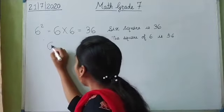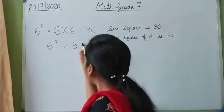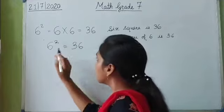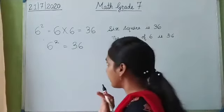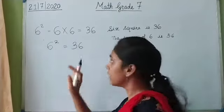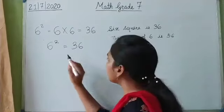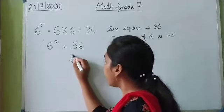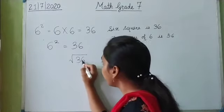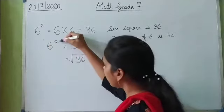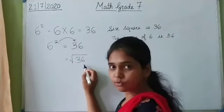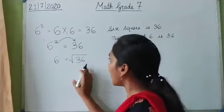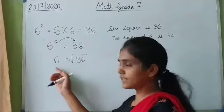I have written 6 squared is equal to 36. But if this square goes to the other side of the equal to sign — it is on the left side right now — if it goes to the right-hand side, then the square sign becomes a square root. The square root sign is like this. After the square goes to the right-hand side, it becomes a square root, and here only 6 remains. So we say the square root of 36 is 6.